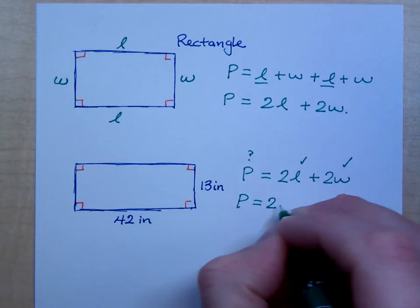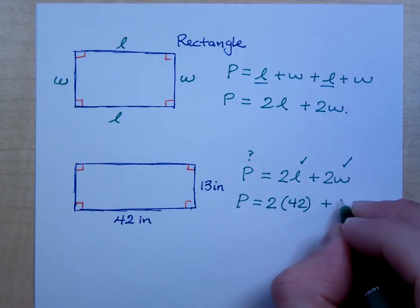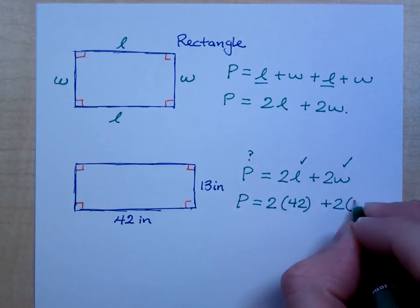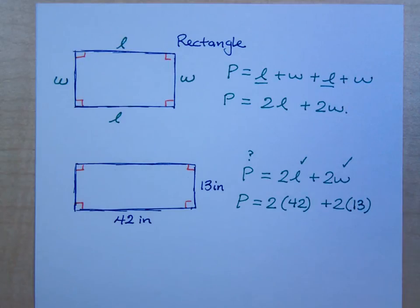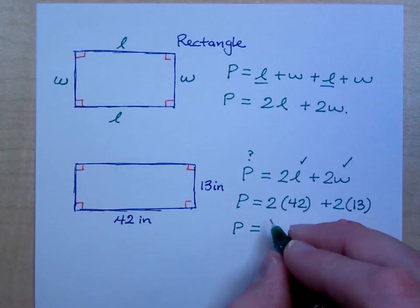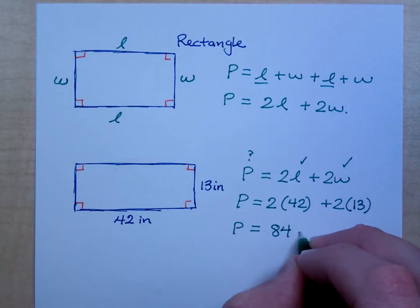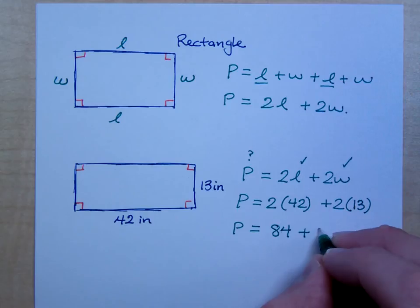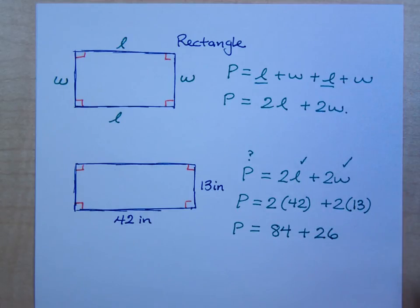The perimeter is twice the length. What is the length? 42 plus twice the, what's the width? 13. So, when I do the math here, what's 2 times 42? 84. 84 plus what? 26. And what is that total perimeter? 110. That's 110 inches. Thank you, Augustus, for reminding us of the units. 110 inches.